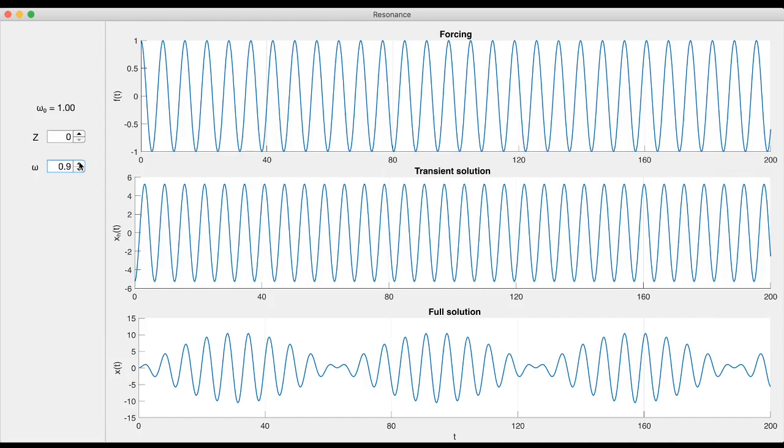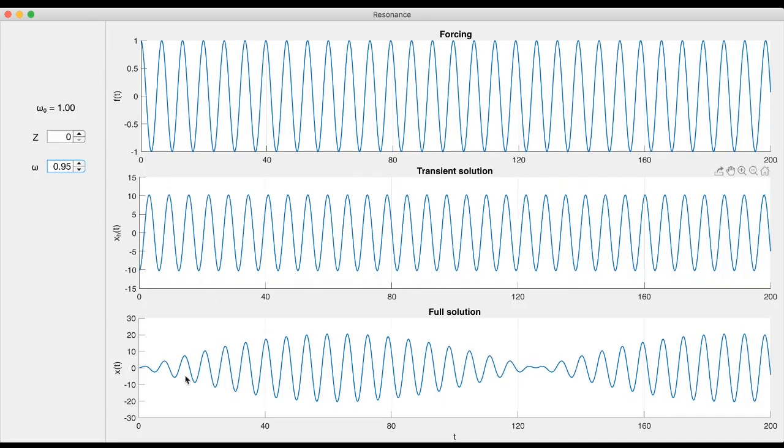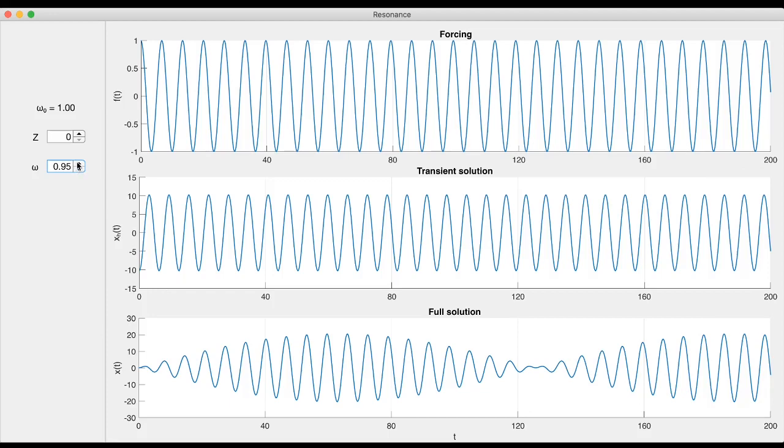But as I get closer and closer to the natural frequency, that time period that it takes to come back down keeps getting longer and longer, and when I'm at perfect resonance, it never comes back down. It just grows linearly forever. So I just continue to put energy into the system at the perfect time so that the energy continues to grow.